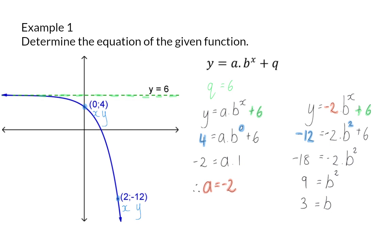Although, algebraically, we should say that b equals plus or minus 3, in the first video on exponential functions, we already mentioned that b can never be negative. So, in this case, b will be 3. This means that the final equation is y equals minus 2 times 3 to the power of x plus 6.